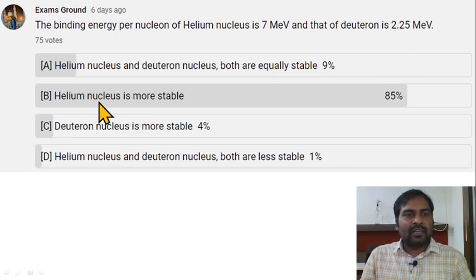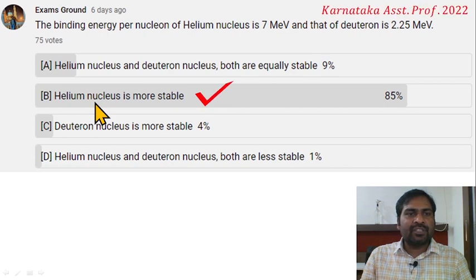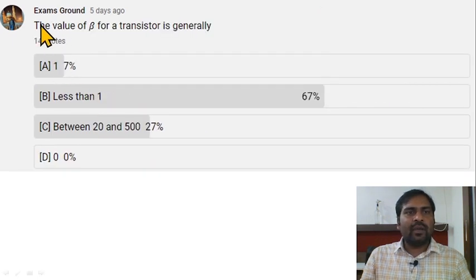The binding energy per nucleon, if it is more, then it is showing more stability. That's why the helium atom is more stable. Option B is correct here.